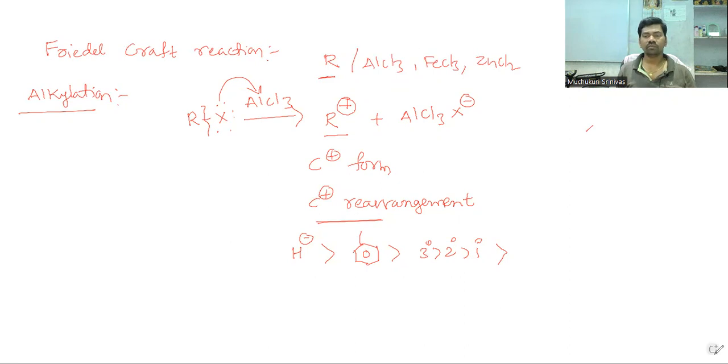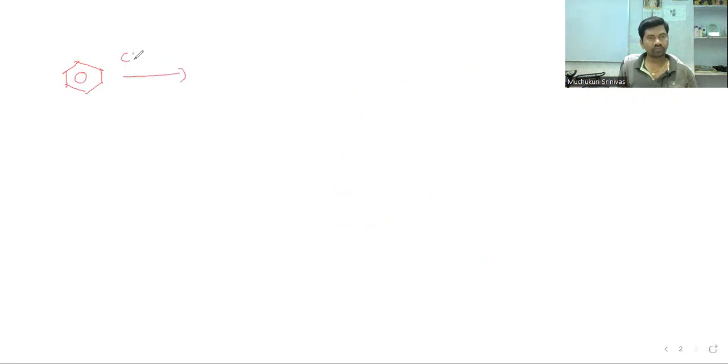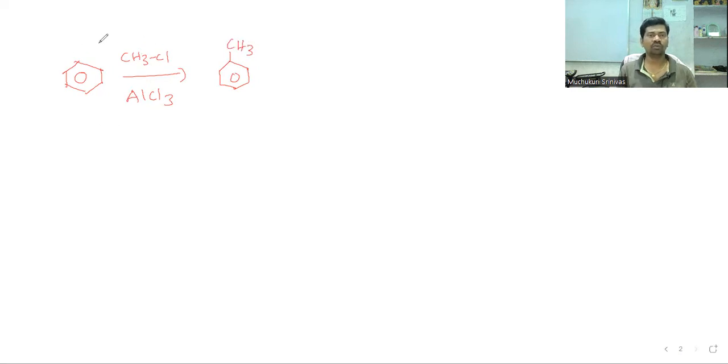For example, benzene reacted with CH3Cl in the presence of a Lewis acid — what product do you expect here? The product is a CH3 group substituted on the ring. It is a simple alkylation reaction.